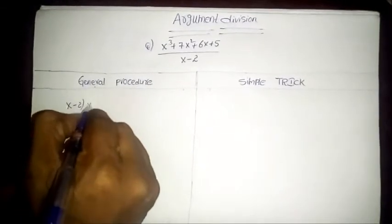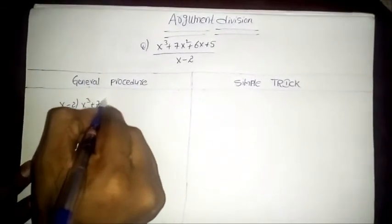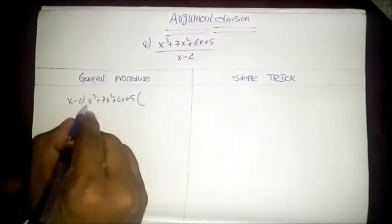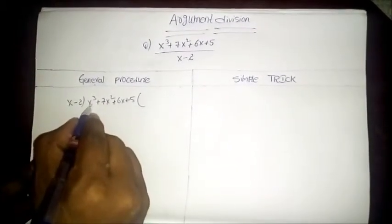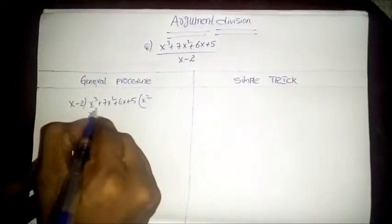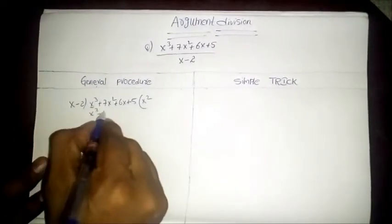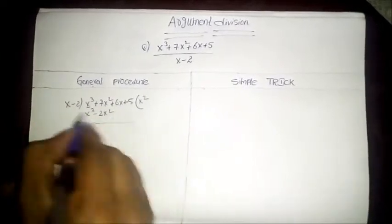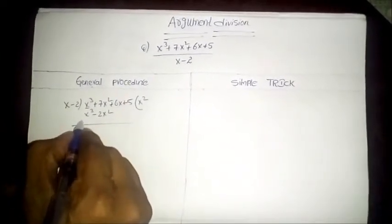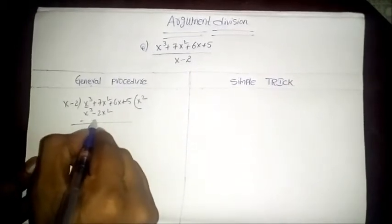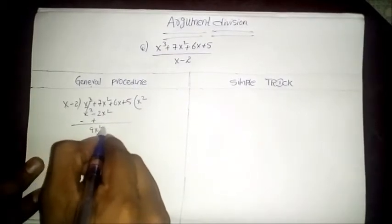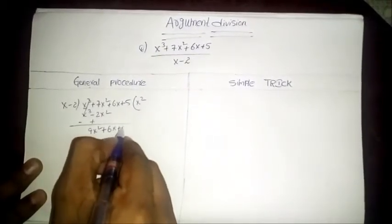Here x minus 2 divides x cubed plus 7x squared plus 6x plus 5. The highest degree is 3, that means x is multiplied with x squared we get x cubed, and minus 2 is multiplied with x squared we get minus 2x squared. For cancellation of x cubed we have to put the opposite signs — here plus we put minus, here minus we put plus. x cubed and minus x cubed get cancelled, leaving 9x squared plus 6x plus 5.